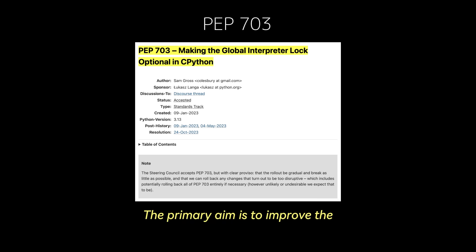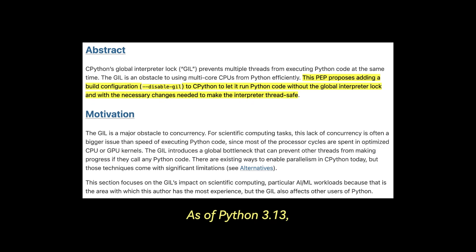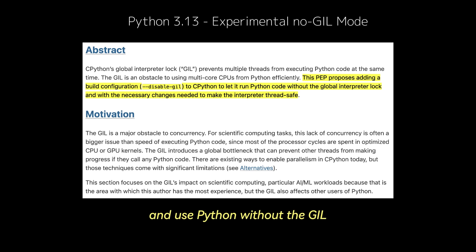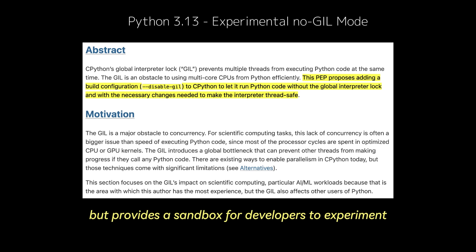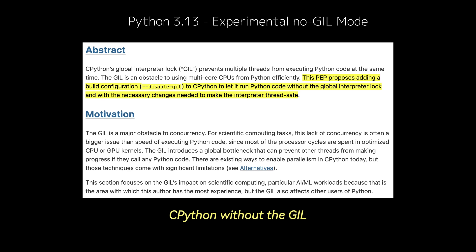The primary aim is to improve the performance of CPU-bound tasks while maintaining backwards compatibility with the extensive Python ecosystem. As of Python 3.13, Python now offers an experimental no-GIL mode that allows developers to build and use Python without the GIL. This feature is not yet the default, but provides a sandbox for developers to experiment and offer feedback. Developers can explicitly build CPython without the GIL using the disable-GIL flag.